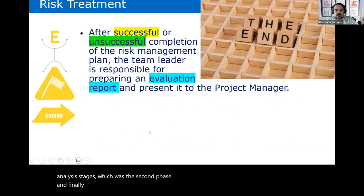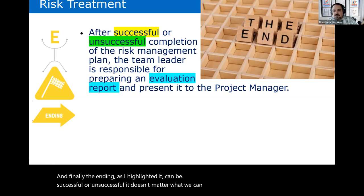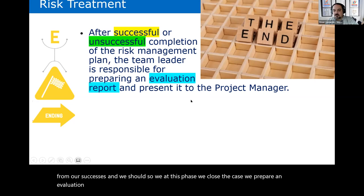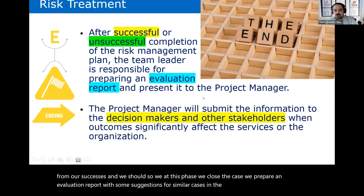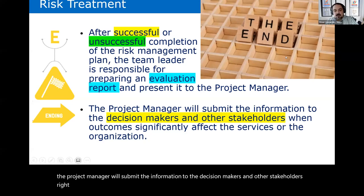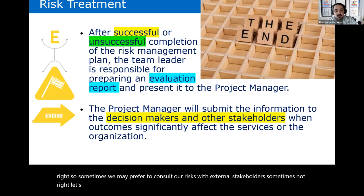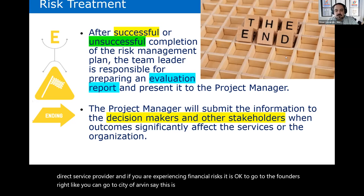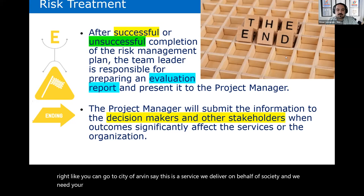The ending phase can be successful or unsuccessful — it doesn't matter. What matters is what we can learn from our failures and successes. At this phase, we close the case and prepare an evaluation report with suggestions for similar cases in the future. The project manager submits this information to decision makers and other stakeholders. Sometimes it's appropriate to consult external stakeholders — for example, if you're a direct service provider experiencing financial risks, you can go to funders and say: this is a service we deliver on behalf of society and we need your support, here is our evaluation report.